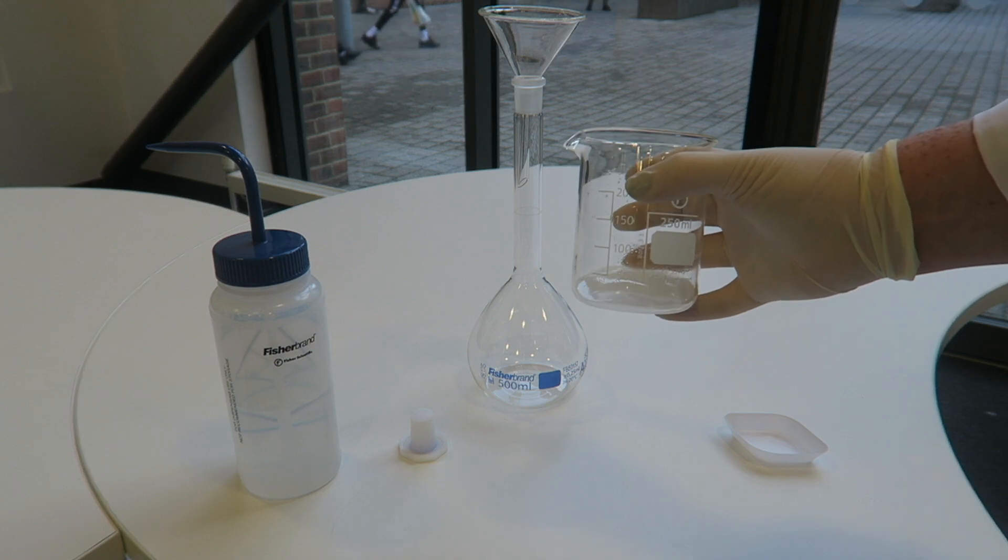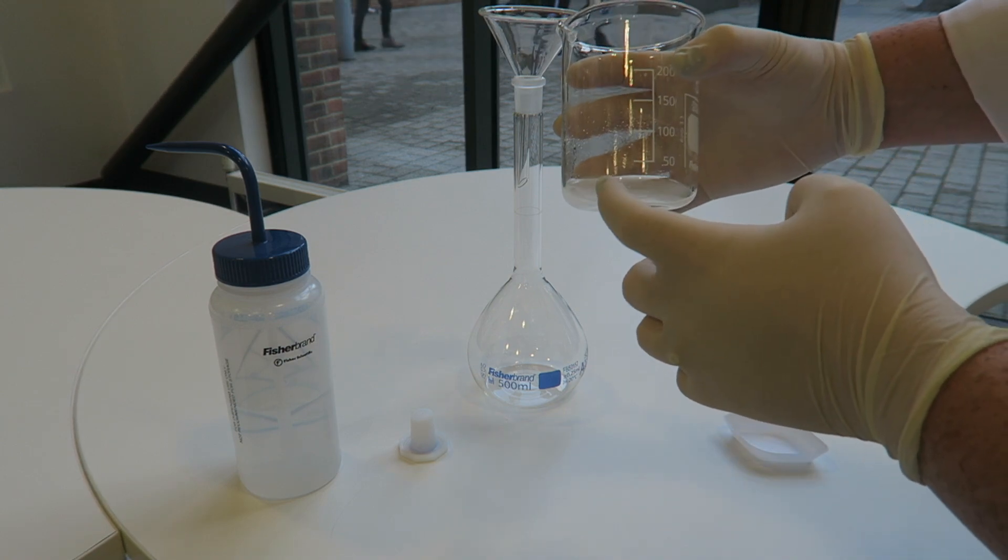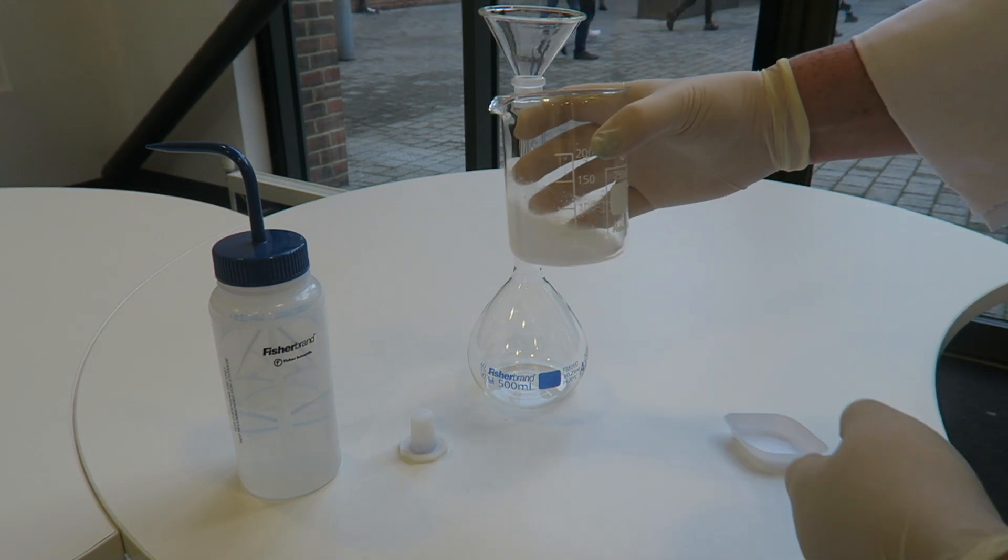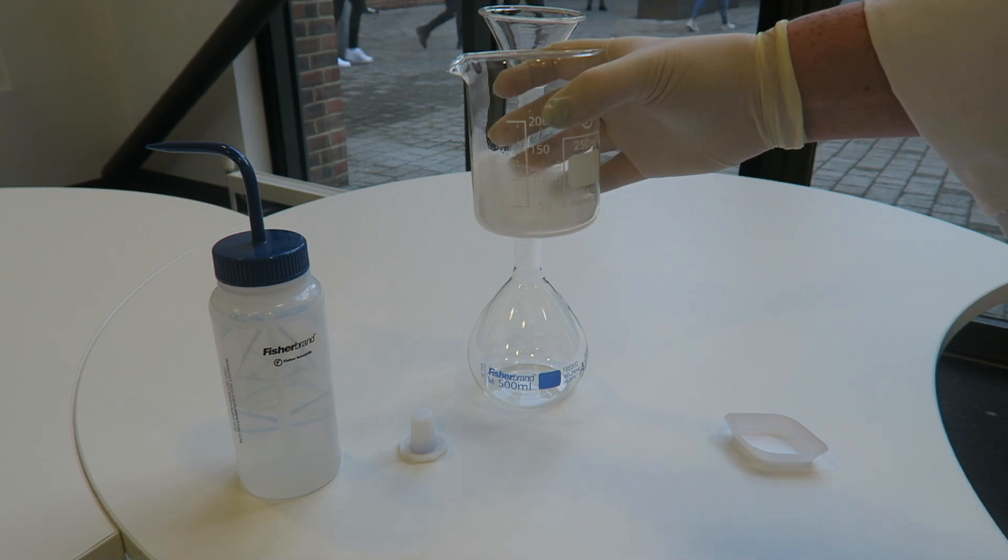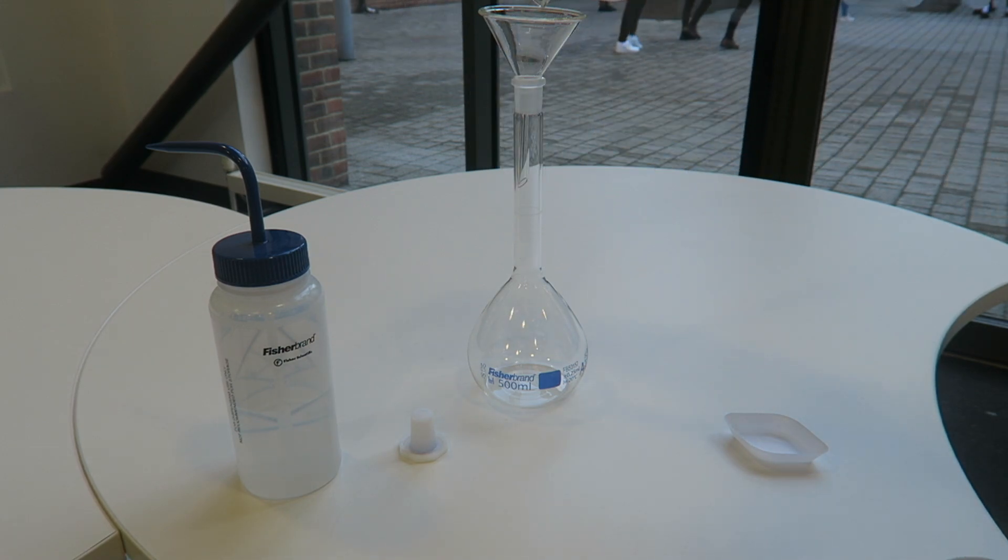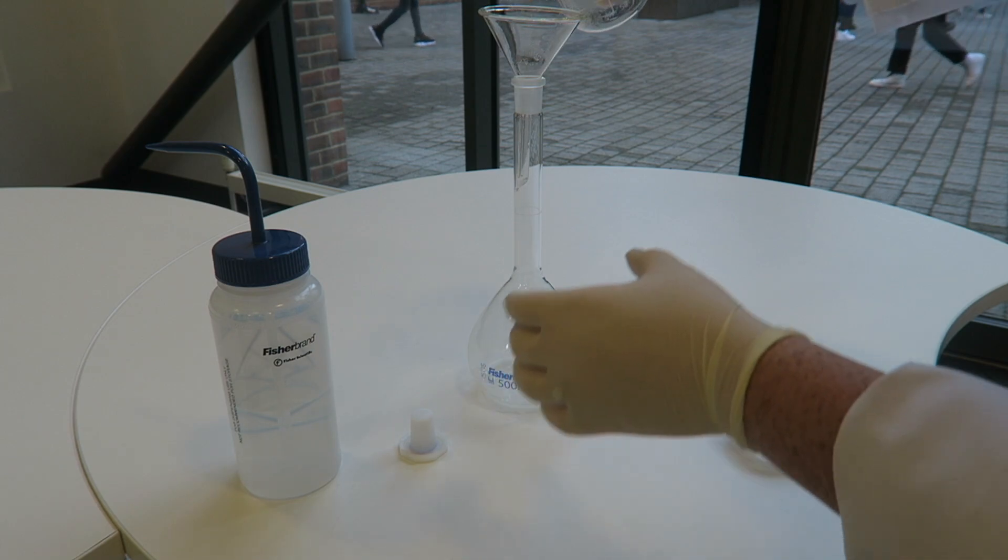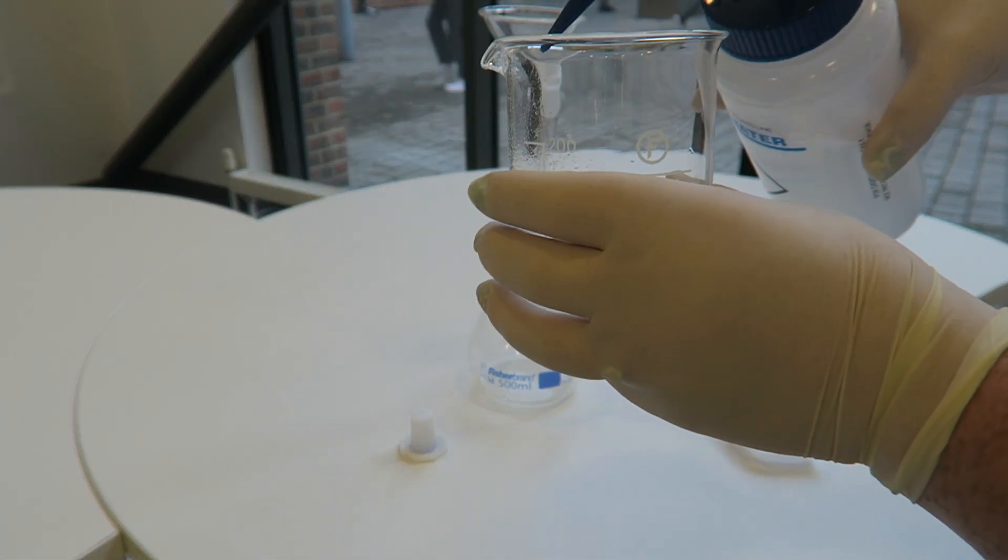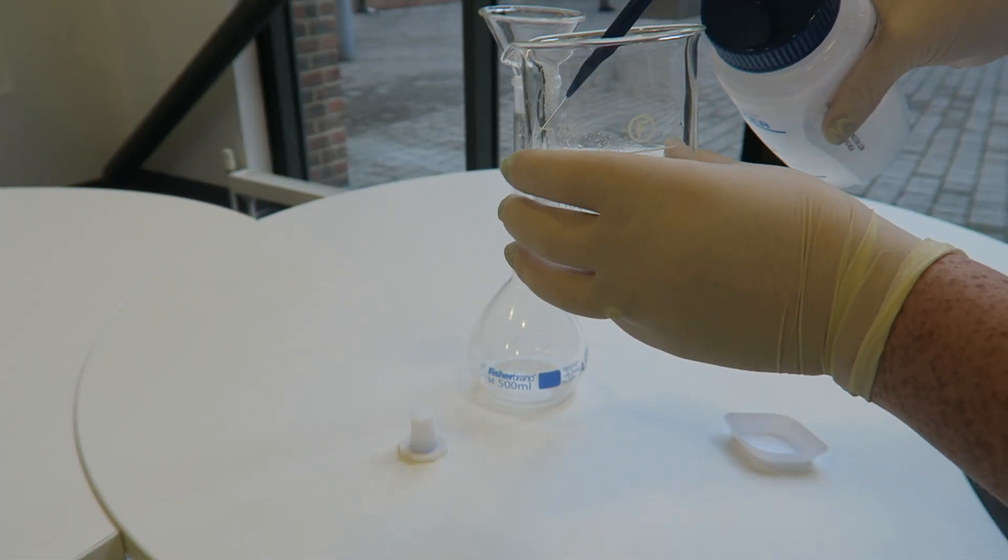Again, the key thing we need to focus on is getting all of the powder that is in here, all of the powder that we added, out into the volumetric flask. So I'm going to pour it in through the filter funnel. Then I'm going to put more water into the beaker.